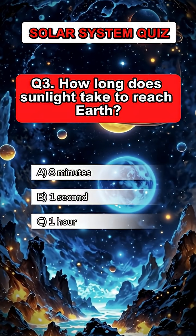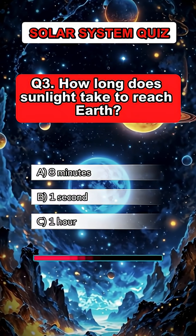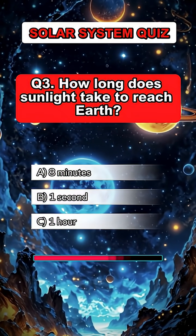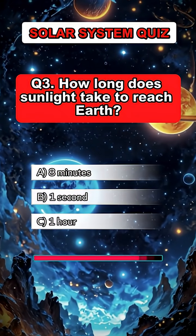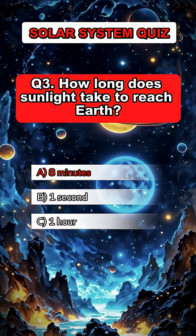Question 3. How long does sunlight take to reach Earth? Answer A. Eight minutes.